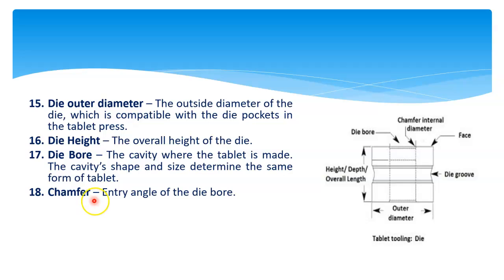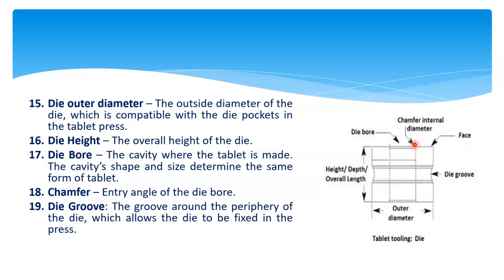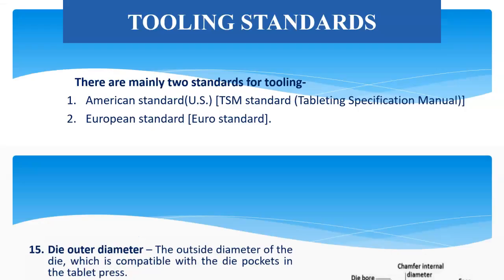Then chamfer — the entry angle of the die bore; this is the entry angle of the die bore, that is called chamfer. Then die groove — this is the die groove of the die, the groove around the periphery of the die which allows the die to be fixed in a press. That covers the definitions of tablet tooling.